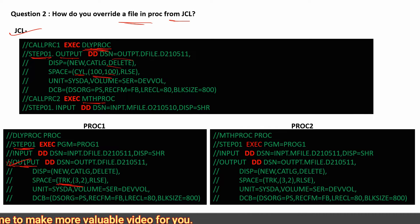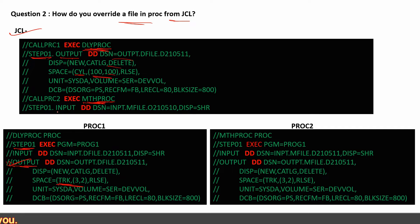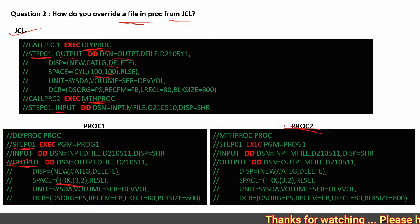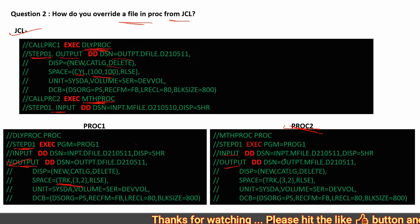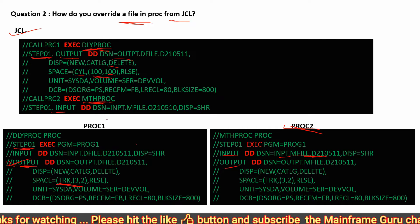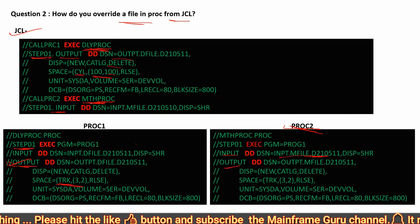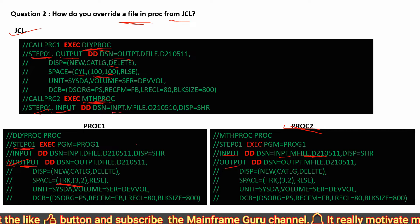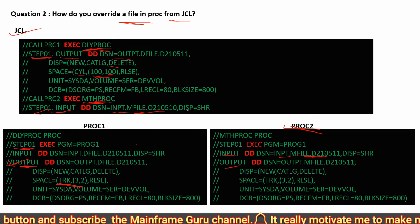To override, you can pick STEP01, give your DD statement — for example OUTPUT.DAILY — and change the SPACE parameter to something like (CYL,(100,100)). That will override the file when you execute. For the monthly program, if you want to override the input file, after the monthly program step you use STEP01.INPUT and provide the DSN of the updated file.